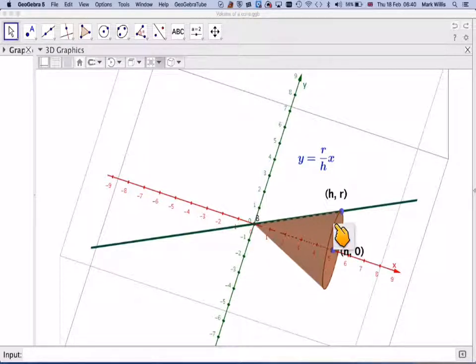We know that this distance here, from here to here, is the same as the radius of the cone. So the coordinates of this point will be h, which is the x-coordinate, and the y-coordinate would have to be r.